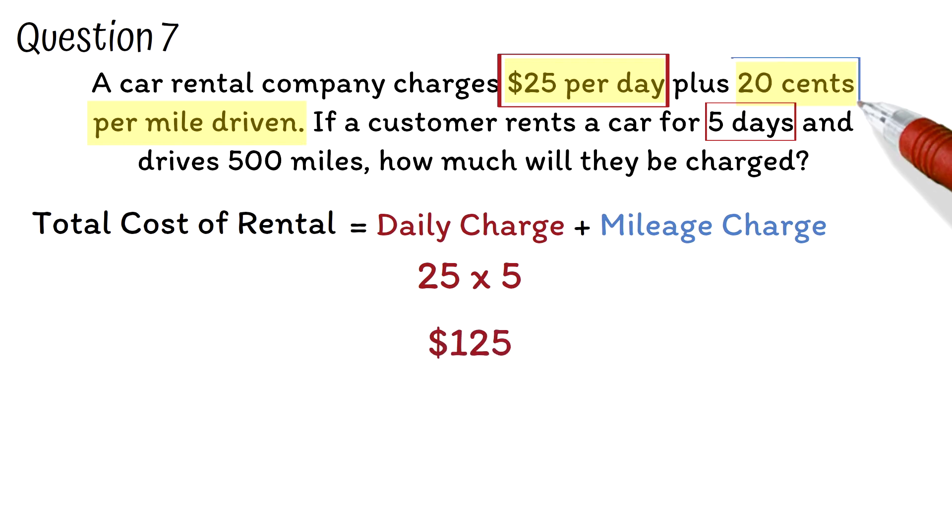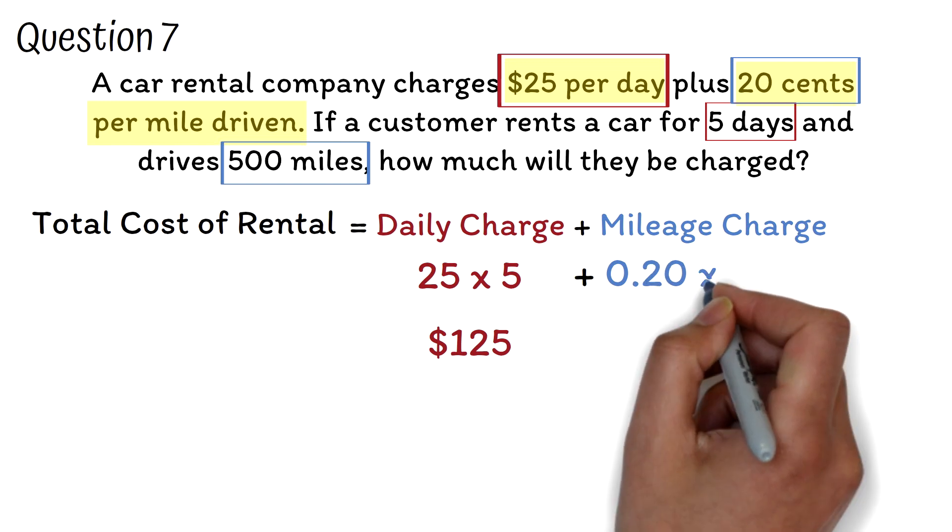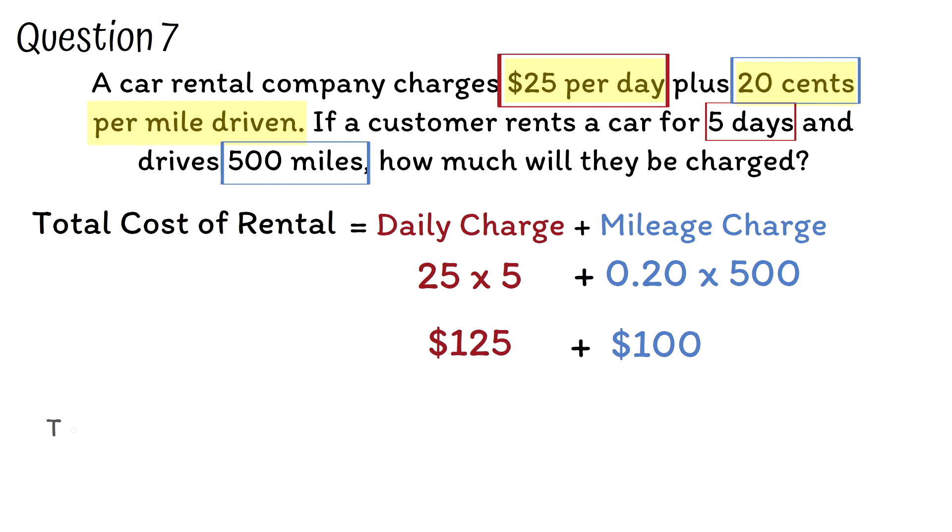The mileage charge is $0.20 per mile driven and the customer drove 500 miles. So, the mileage charge equals $0.20 times 500 miles. This will be $100. We know the total cost is the sum of the daily charge and the mileage charge. So, we have $125 plus $100. We add this to get $225 as our answer. Therefore, the customer will be charged $225 for renting the car for 5 days and driving 500 miles.